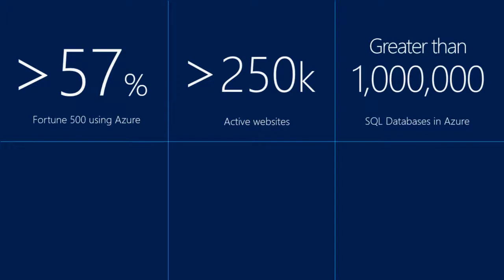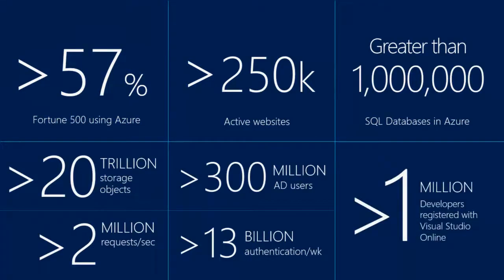In 2010, we had as much compute and storage as the entire world did in 2000. Since then, we have doubled compute and storage every six months. When it comes to the numbers, they're huge. Almost over 57% of the Fortune 500 are already using Azure. Over a quarter of a million active websites, over a million SQL databases in Azure, over 13 billion authentications in Azure Active Directory per week, and over a million developers registered with Visual Studio Online.